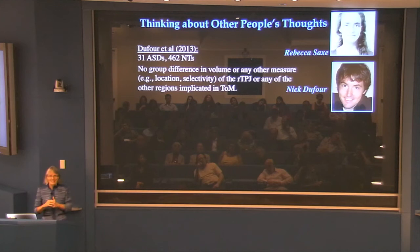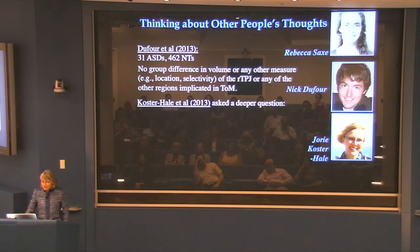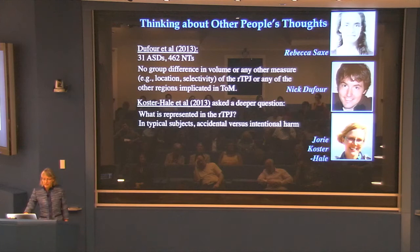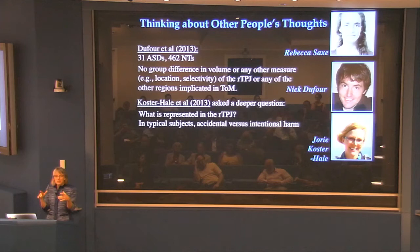There are many different measures of the nature of that activation, and it's just indistinguishable in high-functioning people with autism versus typical subjects. The basic system is there — it turns on for the same task. But does it work the same way? To look at this, Rebecca and Jory Coster-Hale asked a deeper question: what information is represented in there? They had shown in typical subjects that when you scan them doing tasks that require understanding the distinction between accidental harm versus intentional harm, not only is this TPJ region engaged, but the pattern of response across that region lets you tell whether the person is reading about accidental or intentional harm.